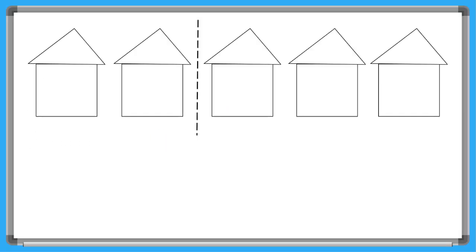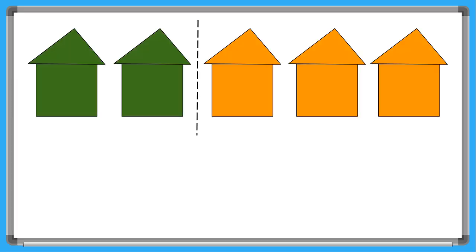John has five houses. If he paints two of the five houses green and the rest orange, what will his houses look like? Yeah, like this.